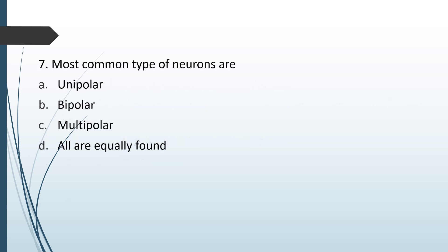Most common type of neurons are: unipolar, bipolar, multipolar, or all are equally found. The correct answer is option C — the most common type of neuron found is multipolar.